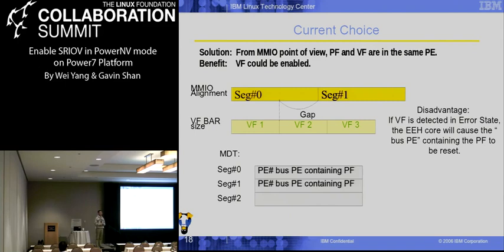The question raised is: if something goes wrong in one VF assigned to one guest, and we perform recovery, this will affect other guests. Yes, that is the disadvantage of this solution — other guests will see this error.